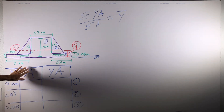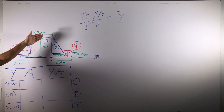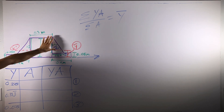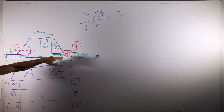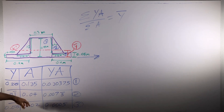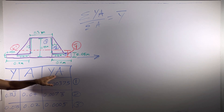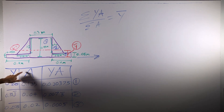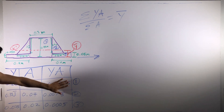Now let's take a look at our areas. For a rectangle that's simply base times height, and for a triangle it's base times height divided by two. For section three it's just base times height. Now that I've filled out y times A — y times A is literally that: you take the y and multiply it by the A and put it in this little box here.